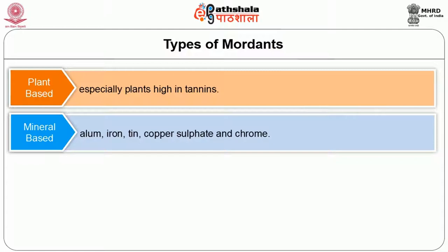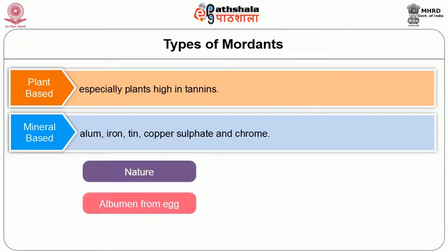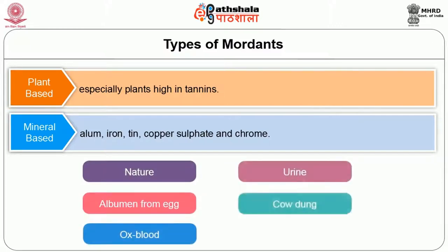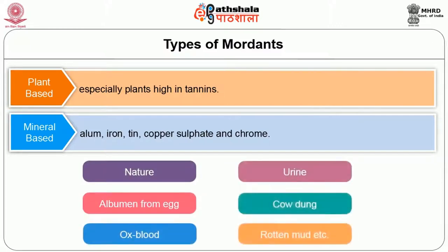In ancient times, mordants were found in nature — albumin from egg, oxblood, urine, cow dung, rotten mud, etc. were used as natural mordants. Nowadays, most dyers use mineral mordants.